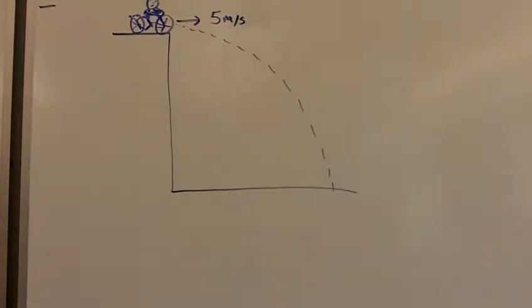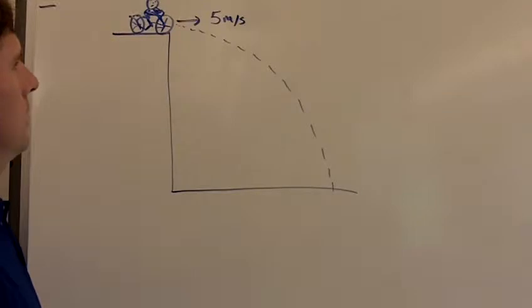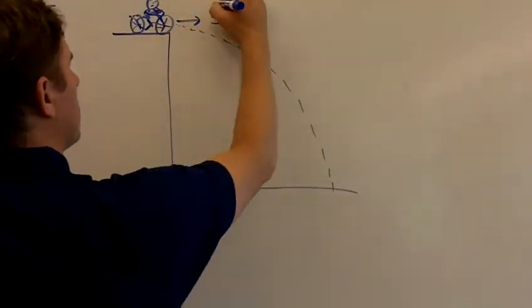So here we're going to do a cliff problem from Unit 2. We have a bicycle that is riding off a cliff. This guy is going 5 meters per second in the horizontal direction, so we would call that velocity in the x direction, 5 meters per second.